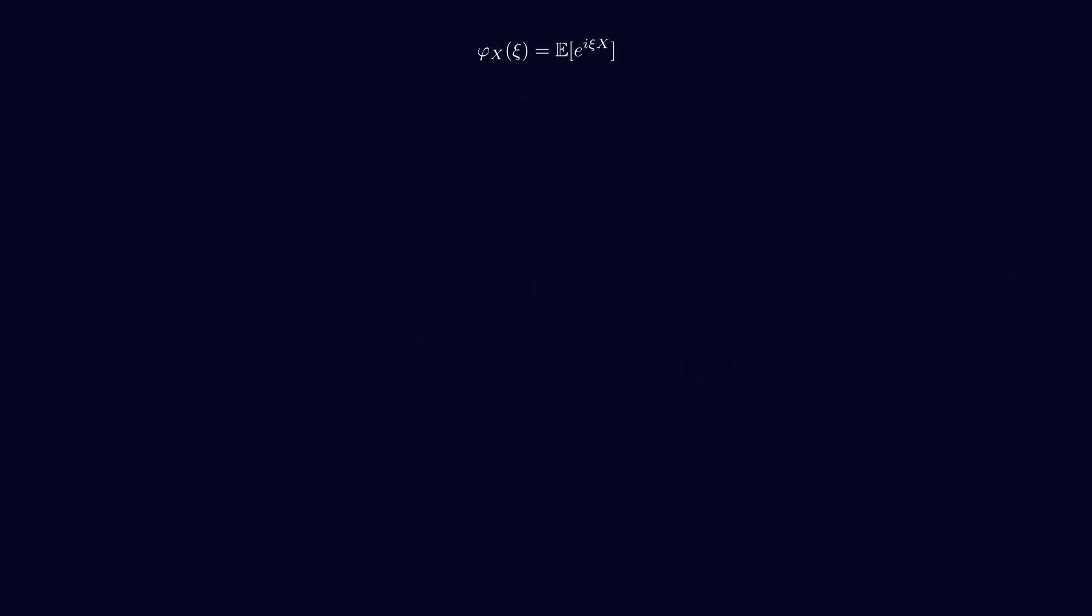Okay, now let's look at the proof. In the first line, we have the definition of the characteristic function. In the second line, we replace it with the integral version with the PDF. Then, we add the PDF for normal distribution. In the fourth line, we combine the two exponentials for simplicity.